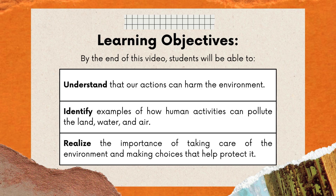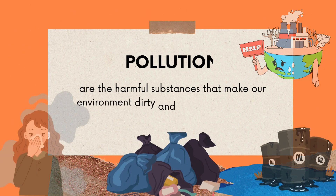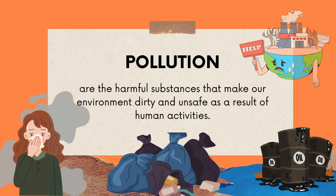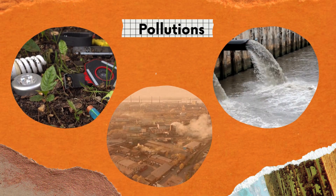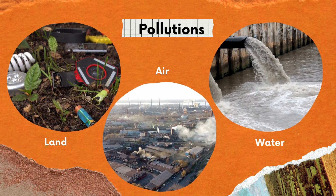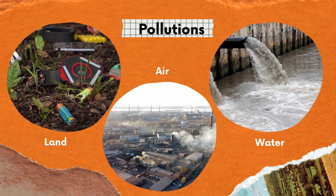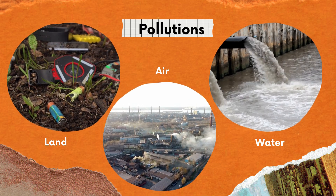Today, we're diving into a topic that affects our planet — pollution. It's when harmful substances make our environment dirty and unsafe as a result of human activities. There are three types of pollution: land, water, and air pollution. Let's explore each type and learn how we can protect our environment.